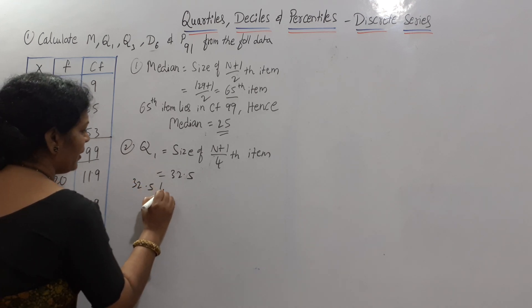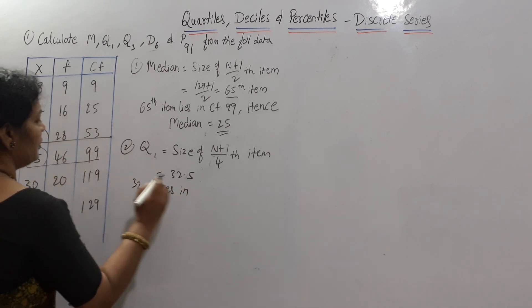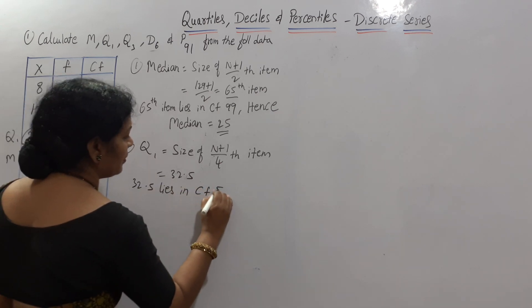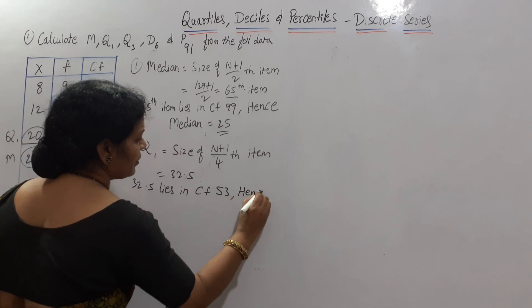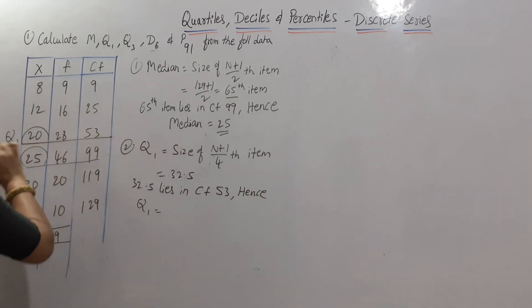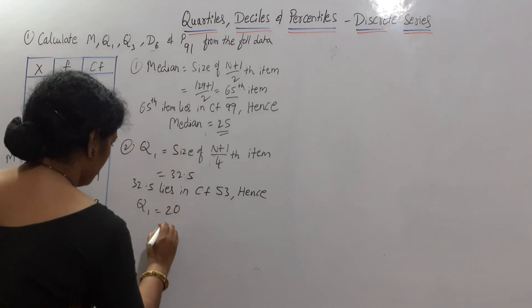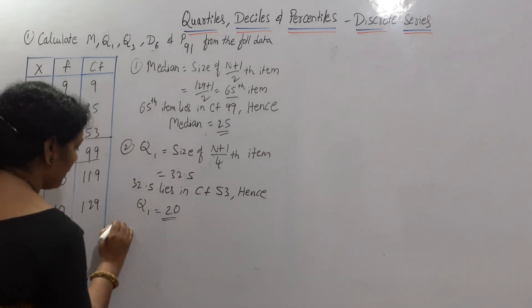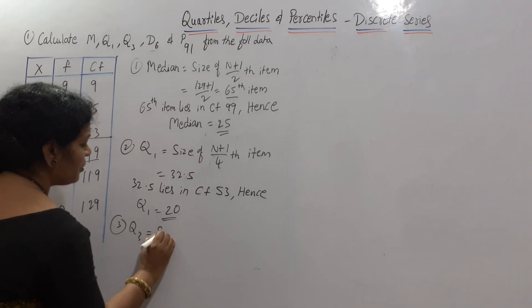Since 32.5 lies in cumulative frequency 53, Q1 corresponds to X = 20. Therefore, Q1 = 20.